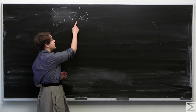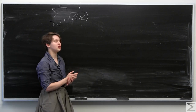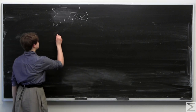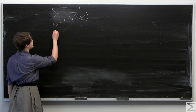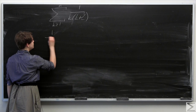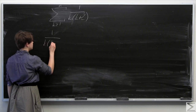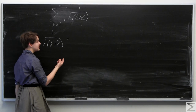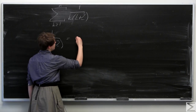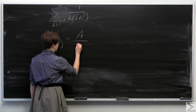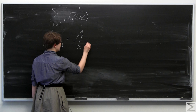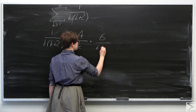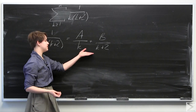The first step is to break down 1 over k times k plus 2 into two separate fractions. We want to get this equal to a over k for some constant a, plus b over k plus 2 for some constant b.